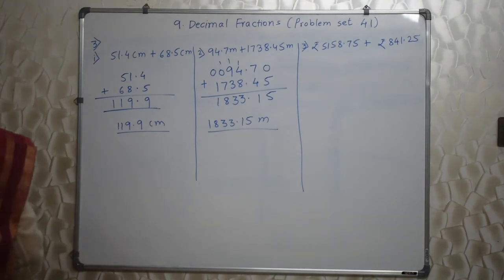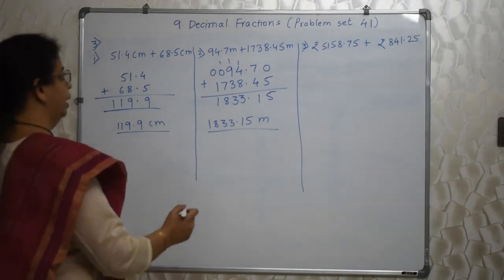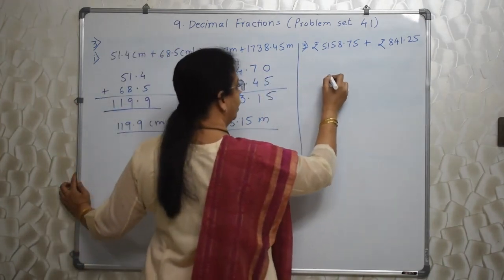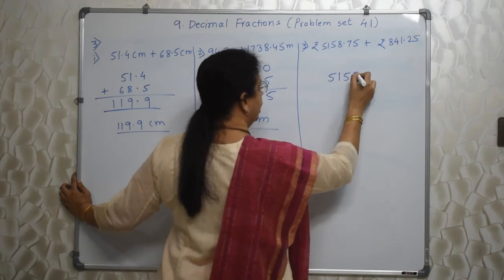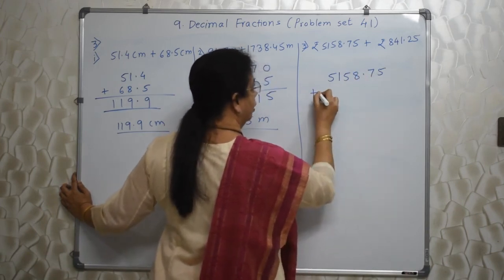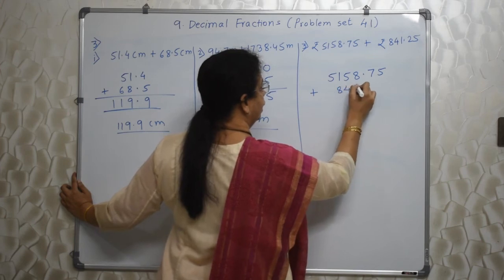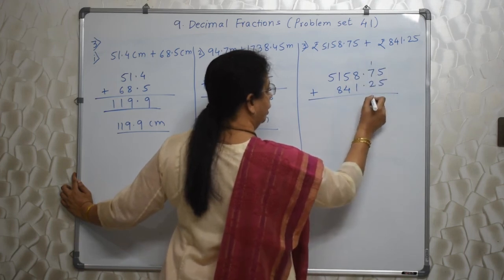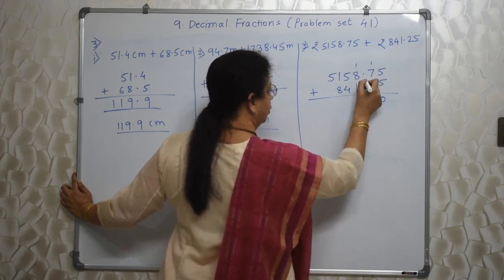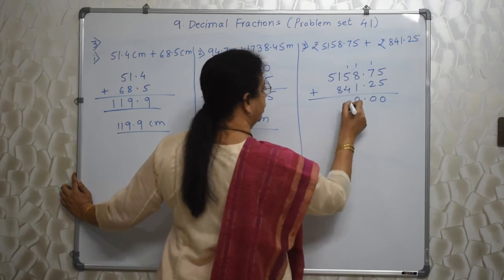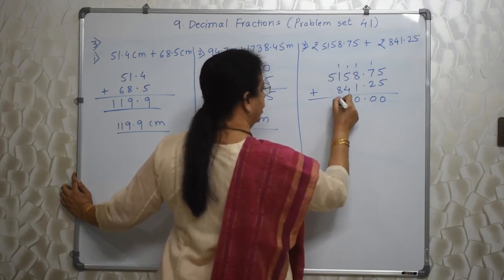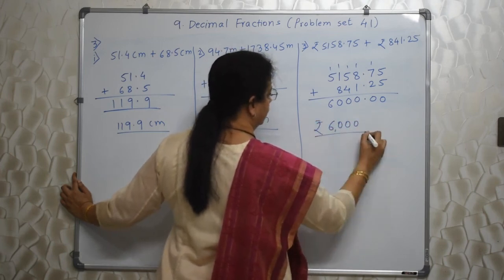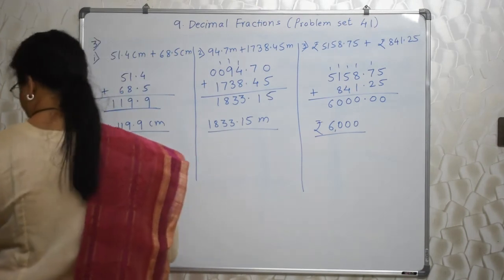Kitna easy hai? Addition is very easy. Rupees ho, meter ho, kuch bhi ho, liter ho — kuch fark nahi padta. Decimal ke niche decimal yeh key factor hai. 841. Theek se likho — point ke niche point aana chahiye. 5 plus 5, 10. Idar aayega decimal. Again 10. Again 10. Again 10. Aur yeh aagaya 6. So rupees 6,000 is the answer. So easy!